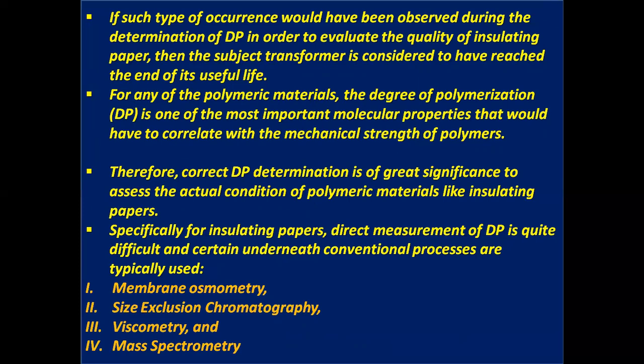For any polymeric material, the degree of polymerization is one of the most important molecular properties that correlates with the mechanical strength of polymers. Therefore, correct DP determination is of great significance to assess the actual condition of polymeric materials like insulating papers. For insulating papers, direct measurement of DP is quite difficult, and certain conventional processes are typically used: membrane osmometry, size exclusion chromatography, viscometry, and mass spectrometry.